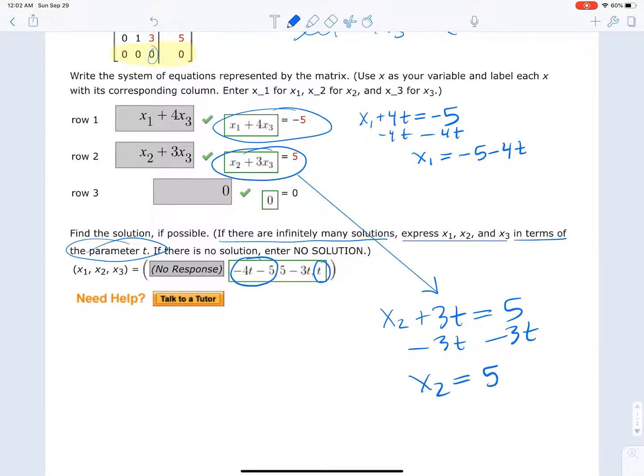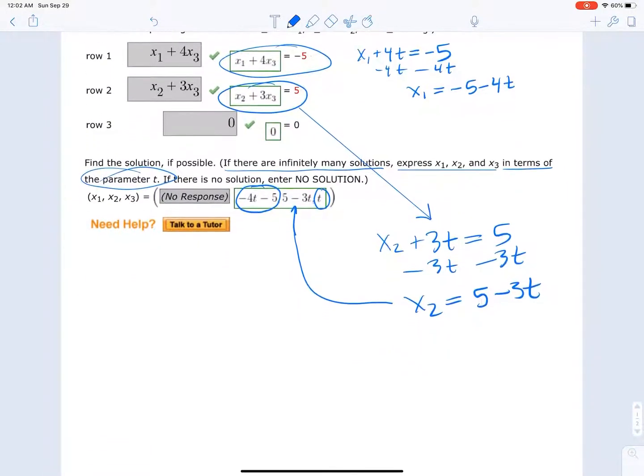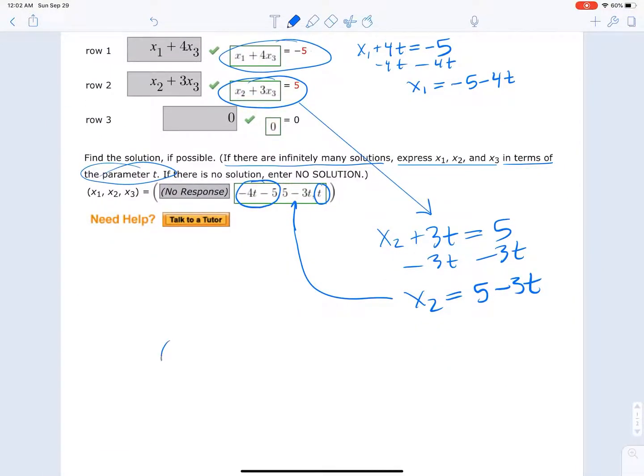So there you go, that's how you get the answers. Notice that they wrote it as an ordered triple. We have it as negative 4t minus 5, 5 minus 3t, and t. That is an ordered triple that represents the infinite solutions. So that's it.